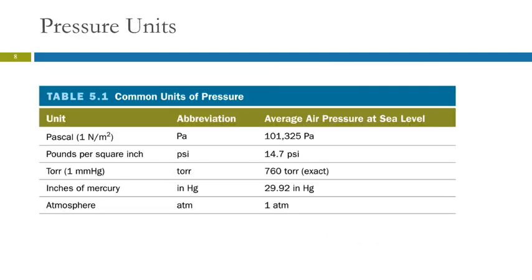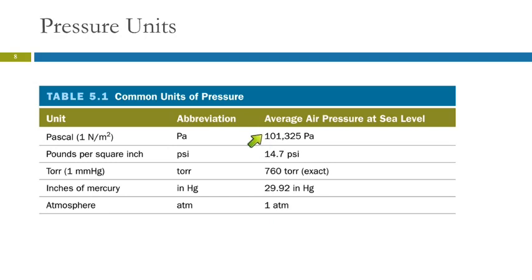We have lots of different pressure units because they're useful in different situations. The Pascal is the SI system unit of pressure — it's a Newton per meter squared, not very useful in chemistry. Average pressure at sea level is 101,325 pascals. You do not need to memorize that.